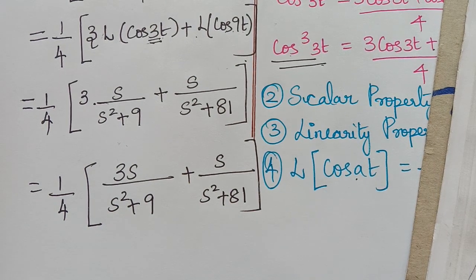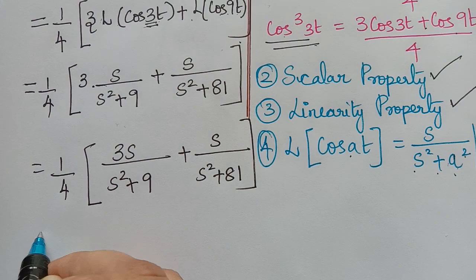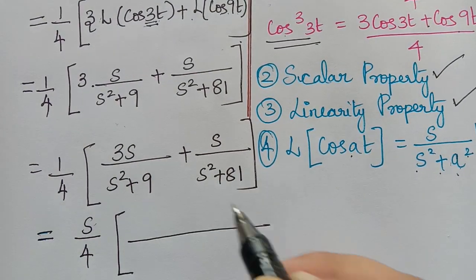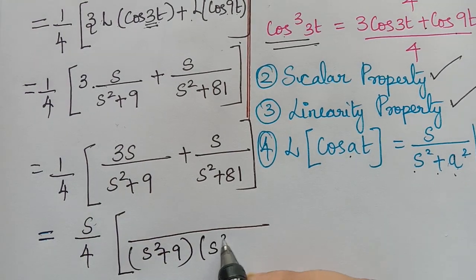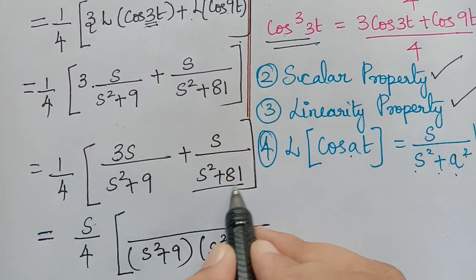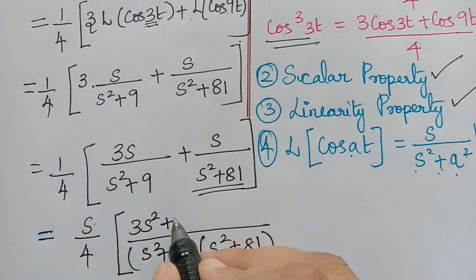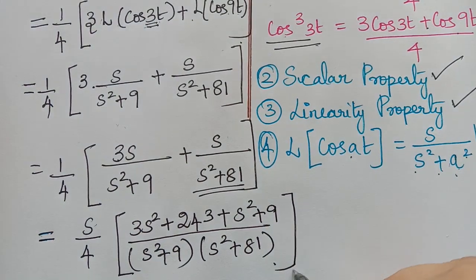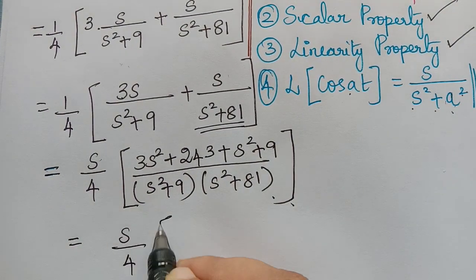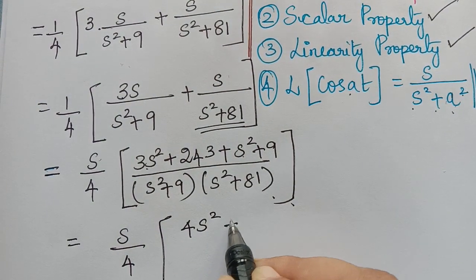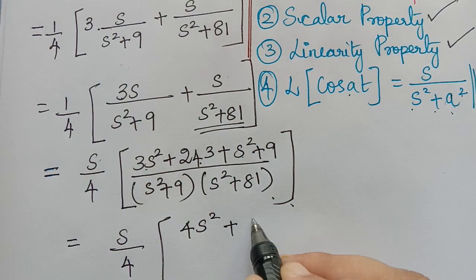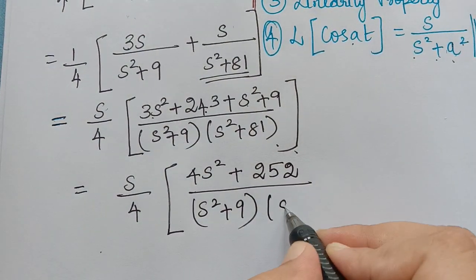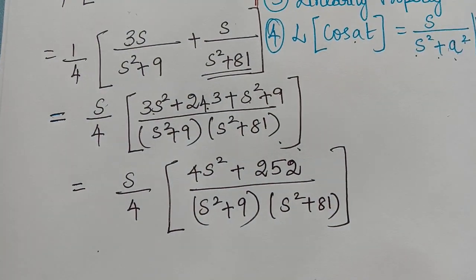We may simplify further by taking s common: (s/4)[3/(s² + 9) + 1/(s² + 81)]. Taking LCM (s² + 9)(s² + 81), the numerator is 3(s² + 81) + (s² + 9) = 3s² + 243 + s² + 9 = 4s² + 252. The final solution is s(4s² + 252) / [4(s² + 9)(s² + 81)].